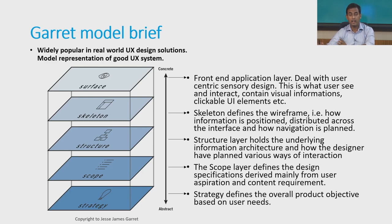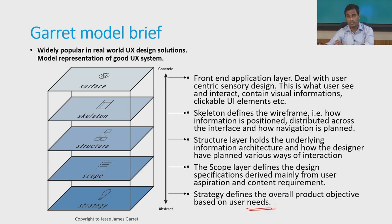The scope layer, which is under the structure layer, defines the design specifications. These are mostly derived based on understanding of user requirements, user aspirations, and content requirements, and are done as part of design research activities. Based on these content requirements, interaction ideas are generated to be implemented at the structure layer. Underneath the scope layer, we have the strategy layer. The strategy layer defines the overall objective to be accomplished as part of the overall UX design solution, and it is based on user needs. Efficient contextual inquiry is very important for capturing user needs well.